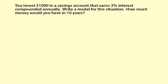You invest $1,000 in a savings account that earns 3% interest compounded annually. Write a model for this situation. How much money would you have in 10 years? So compounded annually means you are using an exponential growth model and it's going to be per year.